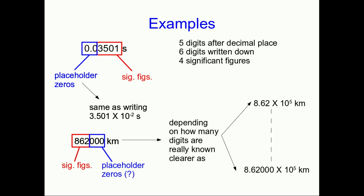You should write it using scientific notation. And now you can make clear, on the one hand, if you only know the 862, then only write them. But if you in fact know those other trailing zeros, you can write them in, and they are then clearly sig figs.